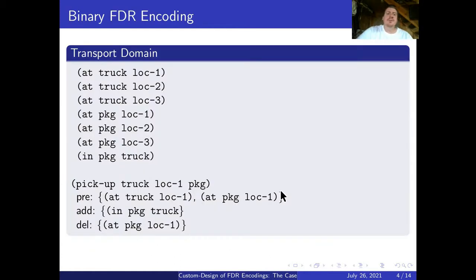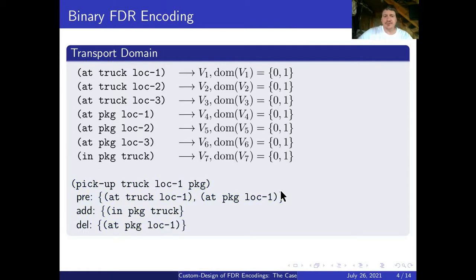The most simple translation from STRIPS to FDR is binary encoding. For example, if you have this transportation domain with facts describing the truck is at a certain location or package is at certain location or package is loaded in the truck, we can simply create one variable for each fact with domain 0 and 1 meaning that the fact is not set in the state or it is set in the state. The translation of the operator is also straightforward.